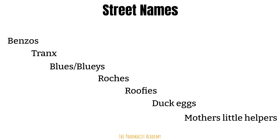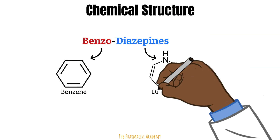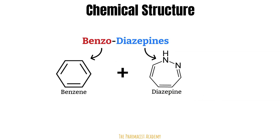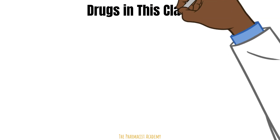All drugs have specific effects because of their chemical structures, and most drugs get their names based on the chemical structure itself. The benzo refers to the benzene ring, and then you have the diazepine ring. When these two are combined, you get the backbone of all benzodiazepine drugs. When different molecules are added to this backbone, that is how we get the different types of benzodiazepines in the drug class.